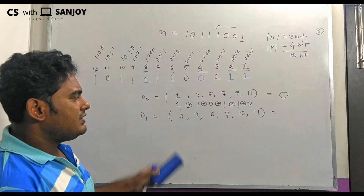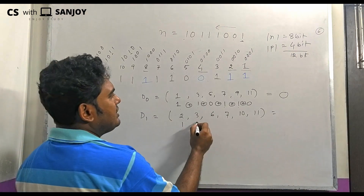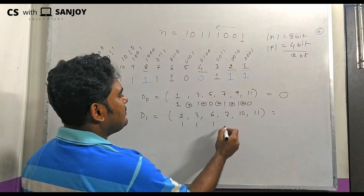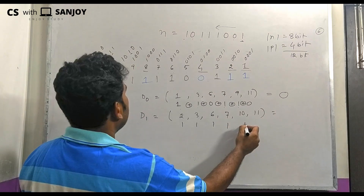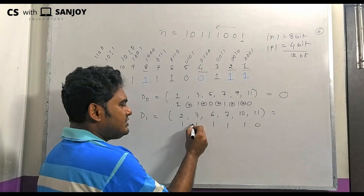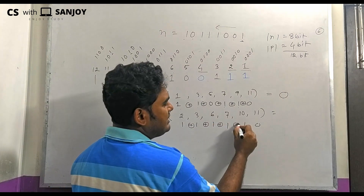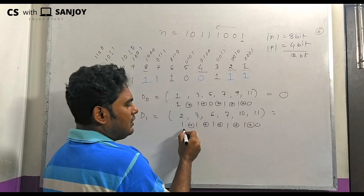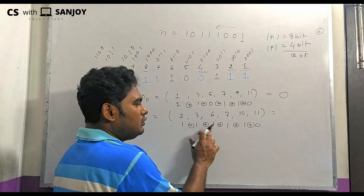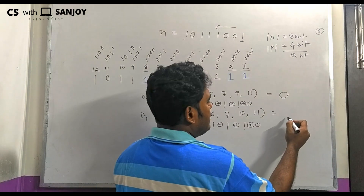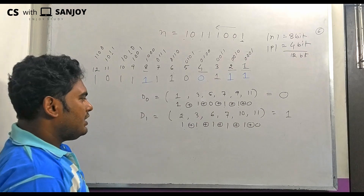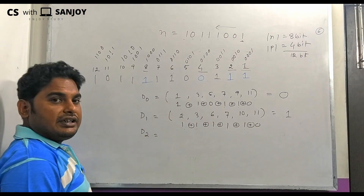Next we calculate D1. We check positions with second bit=1: positions 2, 3, 6, 7, 10, 11. The values are 1, 1, 1, 1, 1, 0 — giving 5 ones, which is an odd number, so D1 equals 1.